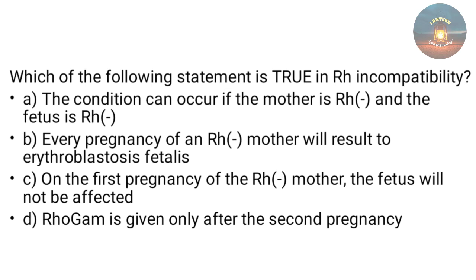Which of the following statements is true in Rh incompatibility? The answer is: on the first pregnancy of an Rh-negative mother, the fetus will not be affected. During the first pregnancy the mother gets isoimmunized, which causes creation of antibodies in the mother, and the second pregnancy will be affected.